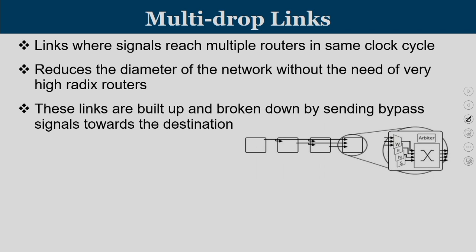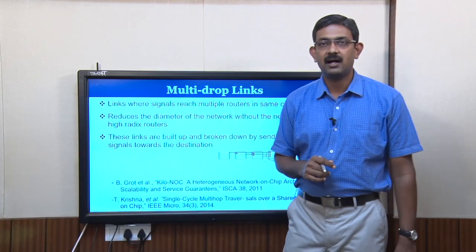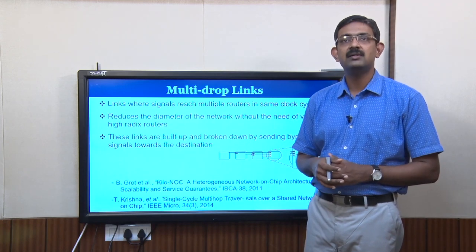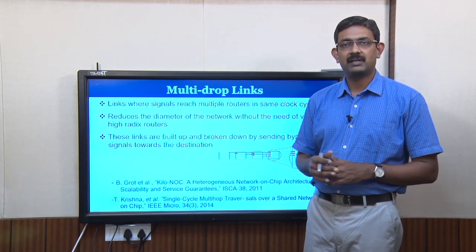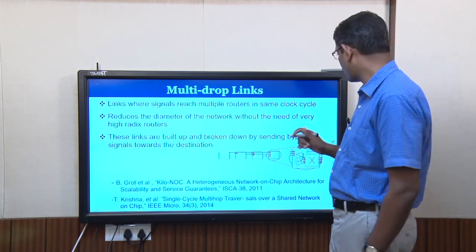Multi-drop links reduce the diameter of the network without the need for very high radix routers. These links are built up and broken down by sending bypass signals towards the destination. A couple of research works are already done in this area, and links to certain research papers will be provided so that interested students can explore good topics.